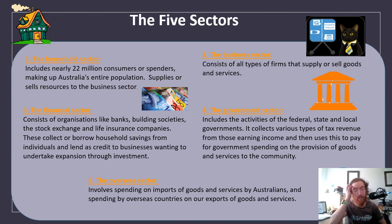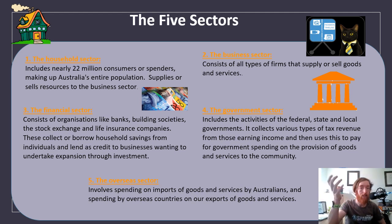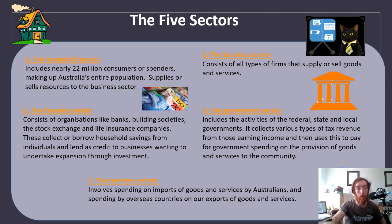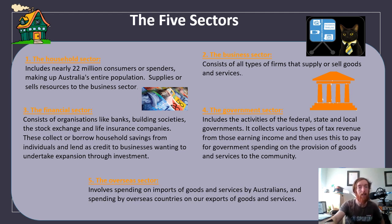The five sectors are: the household sector, who supply resources; the business sector, who produce goods and services; the financial sector — things like banks, building societies, the stock exchange, and life insurance companies, which collect or borrow savings and lend credit to businesses wanting to expand; the government sector, which collects various types of tax and uses it for government spending and provision of goods and services; and the overseas sector, where all imports and exports take place.